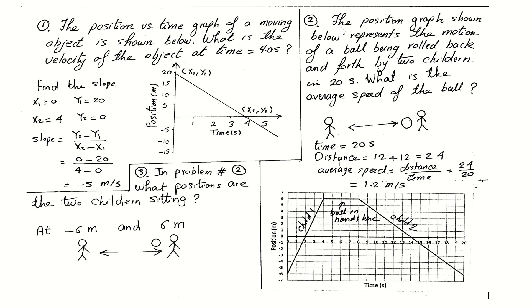Problem number two: the position graph shown below represents the motion of a ball being rolled back and forth by two children in 20 seconds. What is the average speed of the ball? Imagine the situation — you roll a ball to your friend, he holds it for a moment, then throws it back to you, and so on.